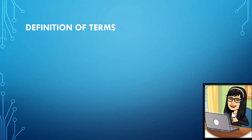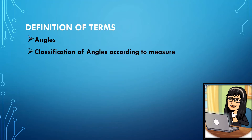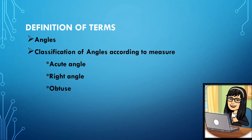Definition of terms — angles. An angle is a union of two non-collinear rays with a common endpoint called the vertex. Angles are classified into two: according to sides and according to measure. Our review will only focus on classification of angles according to measure. We have acute angle — an angle which measures between 0 to 90 degrees. Right angle measures exactly 90 degrees. And an obtuse angle measures between 90 to 180 degrees.